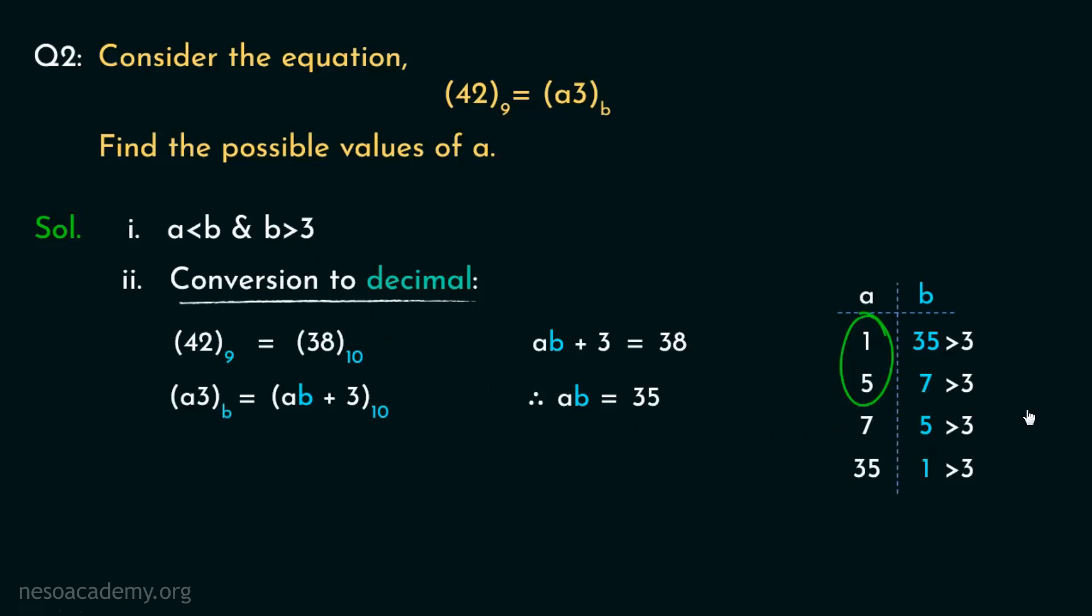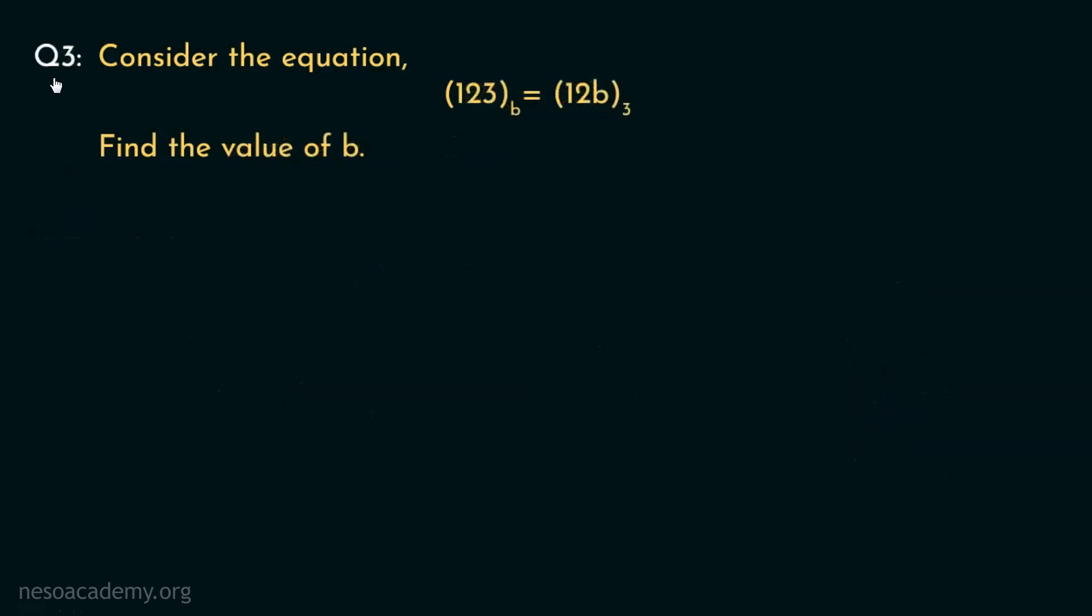Now, let's move on to the final question of this session. Observe this question. Consider the equation (123)ᵦ = (12b)₃. And we have to find out the value of b. So, let's try to solve it. Observe the equation carefully. Here, both the sides include the variable b. Consider the left-hand side, (123) base b. Now, from this, we can determine b should be greater than 3.